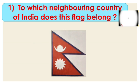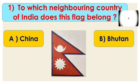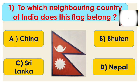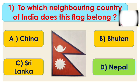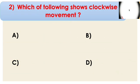First question: to which neighboring country of India does this flag belong? Your options are A. China, B. Bhutan, C. Sri Lanka, and D. Nepal. Time is over — the right answer is Nepal. It is the only flag which is in the shape of a triangle.